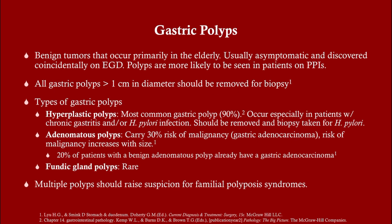Gastric polyps share a lot in common with colonic polyps as far as their histology. Primarily these occur in the elderly. They are not commonly tested because they are not commonly encountered. Think about it — why do we see colon polyps? We see colon polyps because we do routine surveillance colonoscopies. If we didn't do routine surveillance colonoscopies, most of those polyps would never be found, and they would never cause problems because the vast majority of colon polyps are benign and will never be cancerous. The same goes for gastric polyps — they tend to happen in the elderly and are usually discovered incidentally.